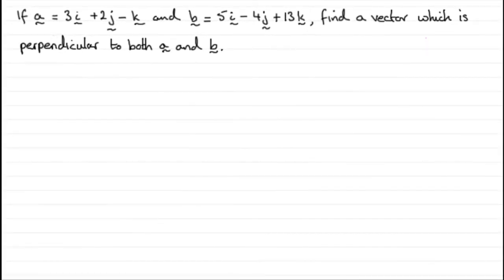Now, this is a good example to do on perpendicular vectors. What we've got here is if A is the vector 3i plus 2j minus k, and B is the vector 5i minus 4j plus 13k, we've got to find a vector which is perpendicular to both A and B.